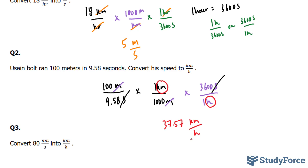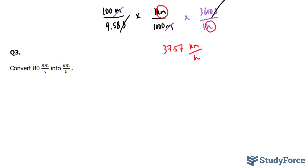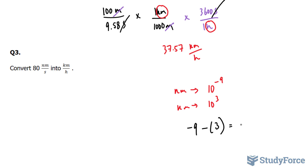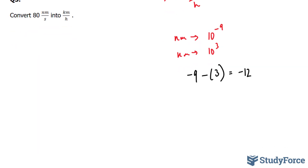Finally, the last question: convert 80 nanometers per second to kilometers per hour. To do this, you need to know the conversion between nanometers and kilometers. Nanometers has a multiplier of 10 to the power of negative 9, and kilometers has a multiplier of 10 to the power of 3. So we take negative 9 and subtract it from 3, ending up with negative 12. This tells us that 1 nanometer is equal to 10 to the power of negative 12 kilometers — that is one of our conversion factors.